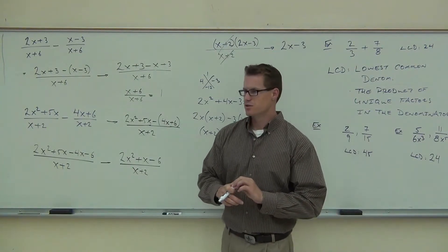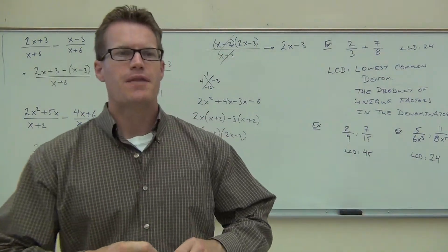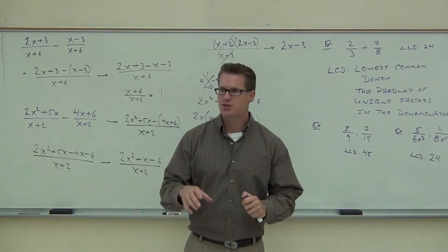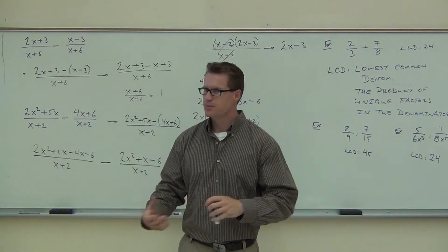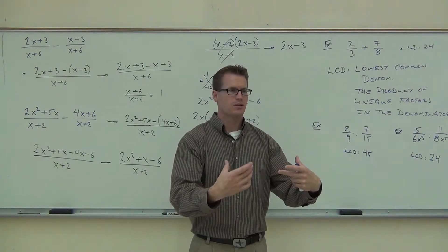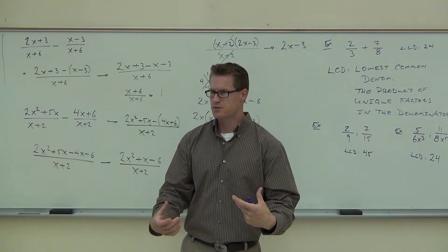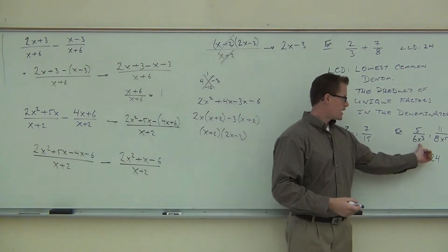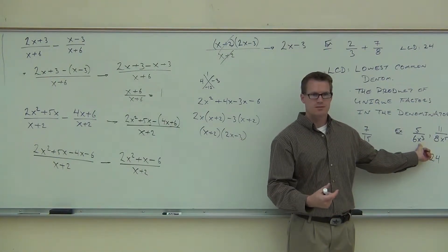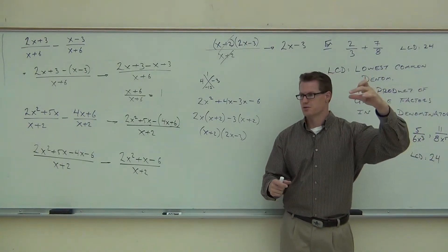The variables are what I need you to worry about. You have to get this part right. Here's how you find the LCD of any variables or any factors: you look for each type of factor, considering both denominators, and you take the largest power that you can find of that particular factor. Notice how this is x times x times x — that means we have x to the third power.